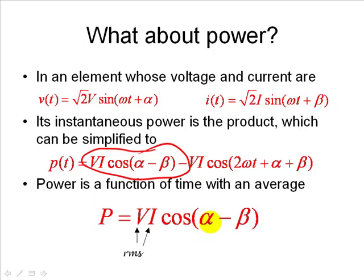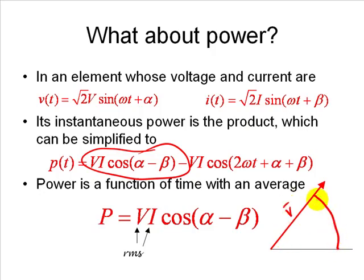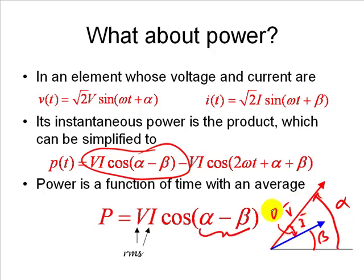That angle is the difference between the phase of the voltage alpha minus the phase of the current beta. Graphically, if this is the phasor for voltage at angle alpha, and this is the current phasor at angle beta, then the angle we are taking the cosine of — the difference angle between phasor V and phasor I — is the power angle theta.